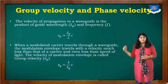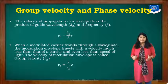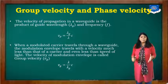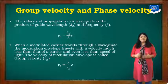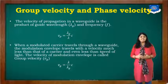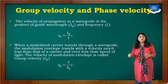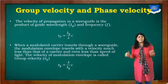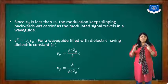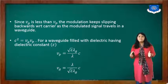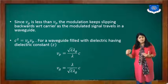The next parameter is group velocity and phase velocity. The velocity of propagation in a waveguide is the product of the guide wavelength and frequency. The phase velocity vp equals (lambda g / lambda) times c. When a modulated carrier travels through a waveguide, the modulation envelope travels with a velocity much less than that of the carrier and even less than the speed of light. This velocity is called the group velocity vg, where vg equals (lambda / lambda g) times c. Note that vg is less than vp, and c² equals vg times vp.